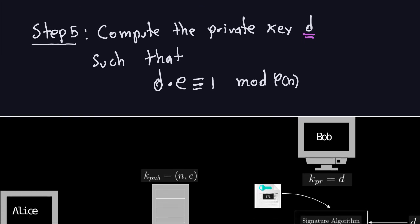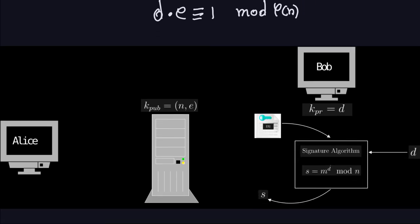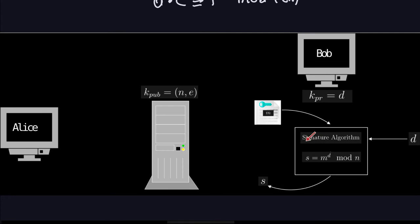On Bob's side — the person sending the message — the private key K_PR is D, which Bob must keep secret. The public key K_PUB is the pair (N, E): the public modulus and the public exponent. Anyone can access the public key, but only Bob is supposed to know the private key. Bob wants to send a message to Alice, so he takes the message, puts it into the signature algorithm, which takes as input the message and the private key D.